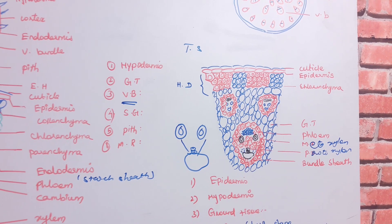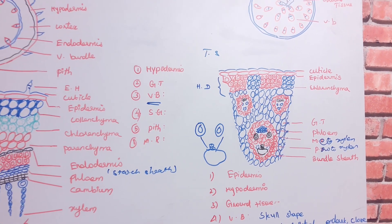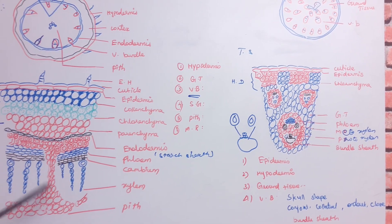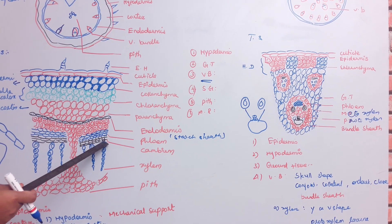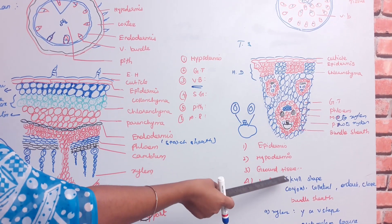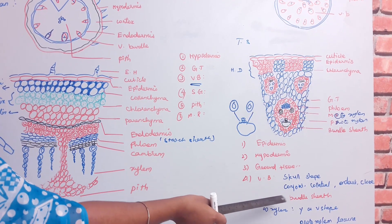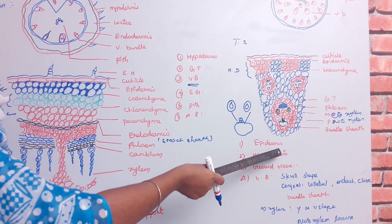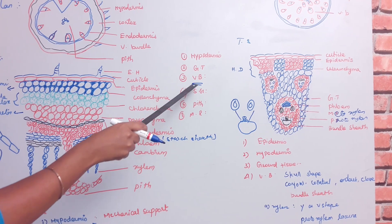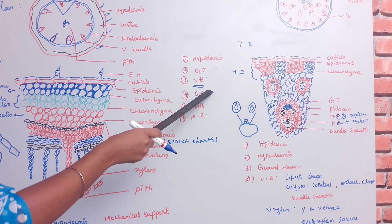The fourth difference is the shape of the vascular bundle. In the dicot stem, it is wedge-shaped. In the monocot stem, it is oval or skull-shaped. The fifth difference is that in the dicot stem, the vascular bundle is open — meaning cambium is present between phloem and xylem. In the monocot stem, the vascular bundle is closed — cambium is absent.